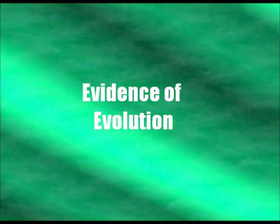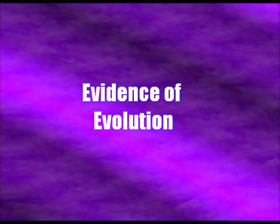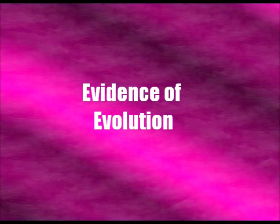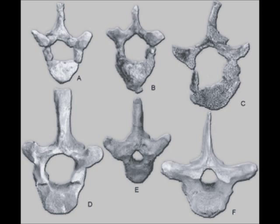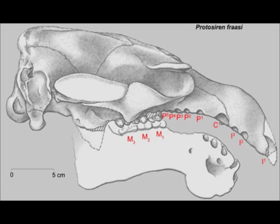Fossil evidence shows how the manatee evolved from its ancestor the Protosiren in the early Middle Eocene. The vertebrae of the manatee and its ancestors show how it has grown in size from the Protosiren. More evidence to indicate its evolution is how the unique dental system of the manatee evolved from its ancestors — the first dental system appeared primitively in the Protosiren, as fossils of its skull demonstrate.